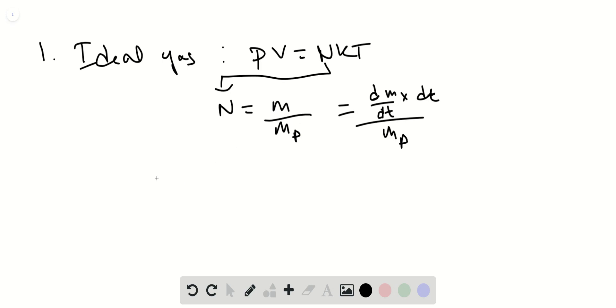And so if we plug this into the ideal gas equation, we have PV equals dm/dt times dt over mp, mass of the particle, times KT.